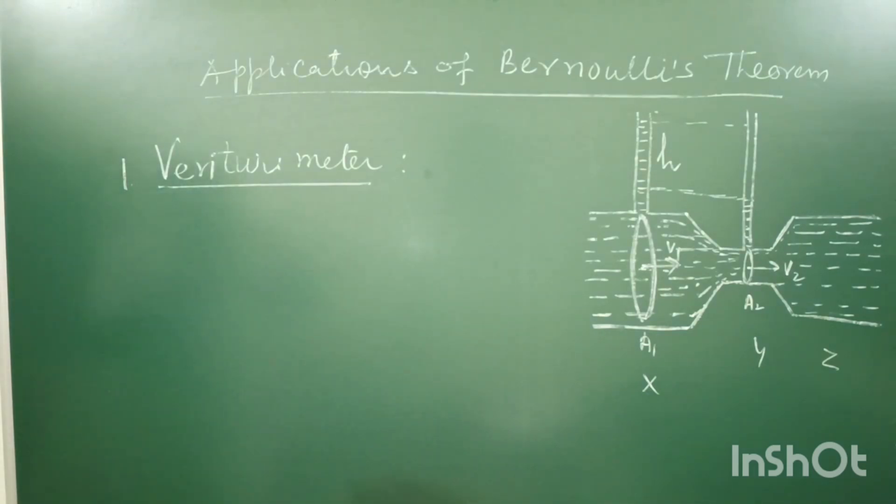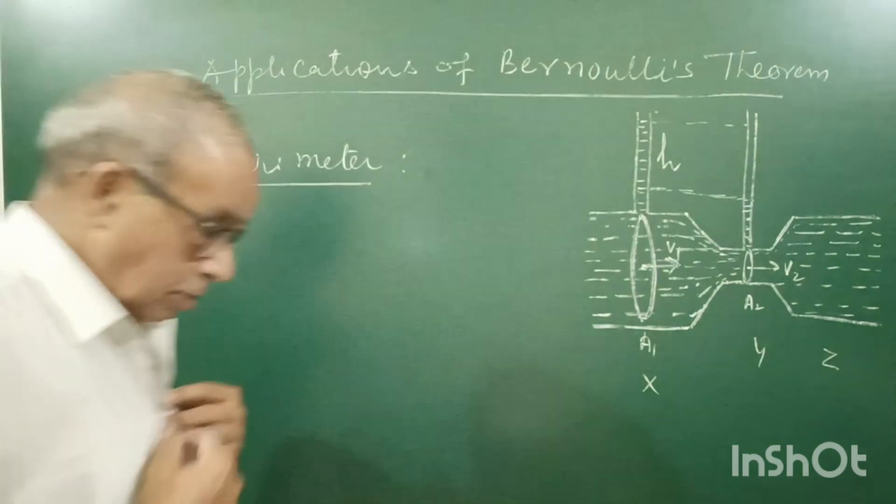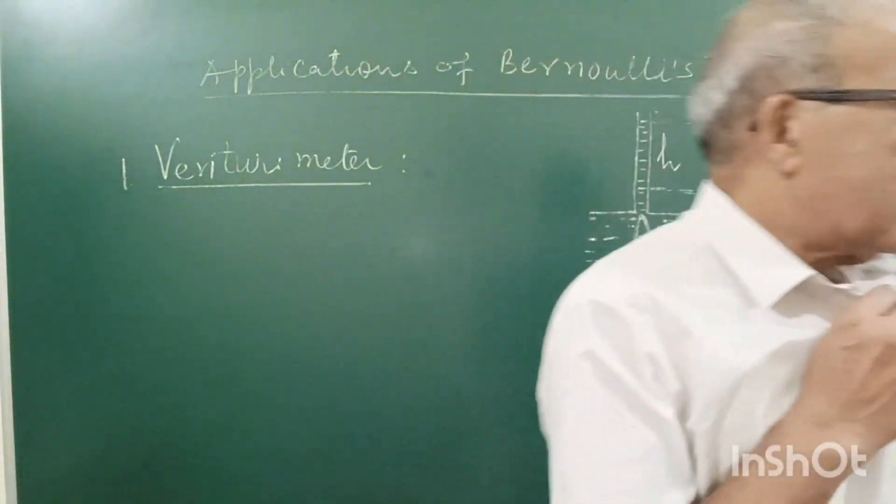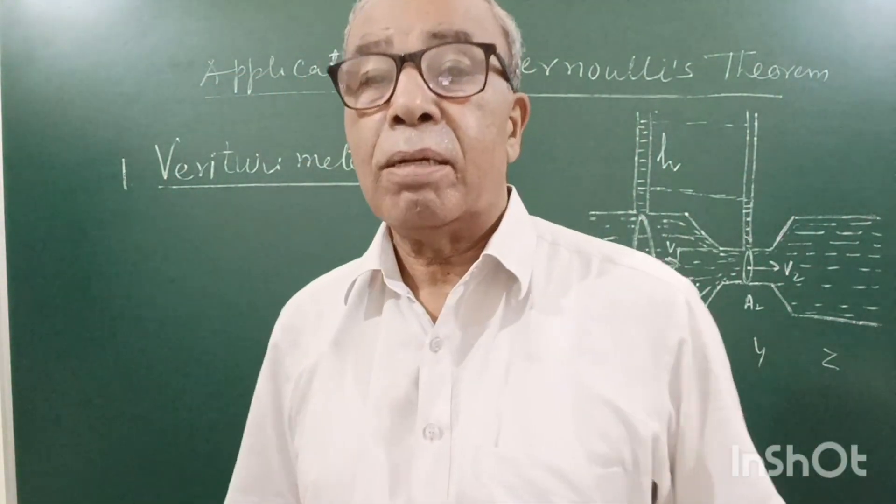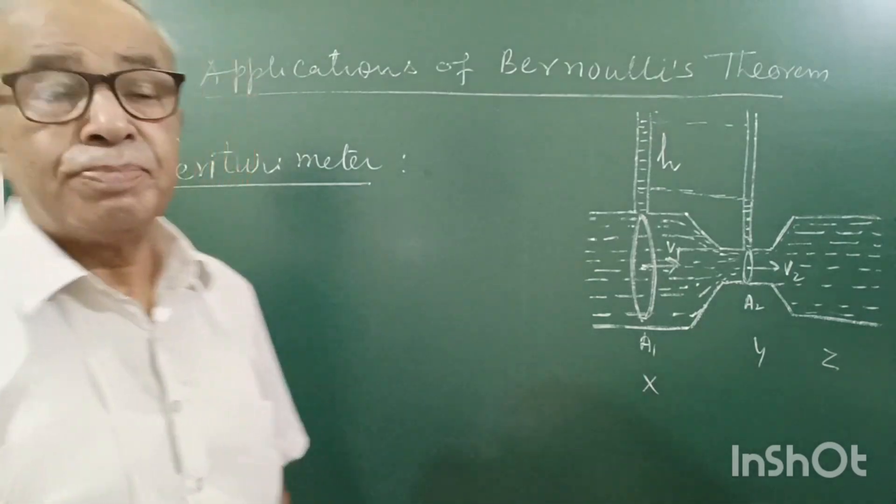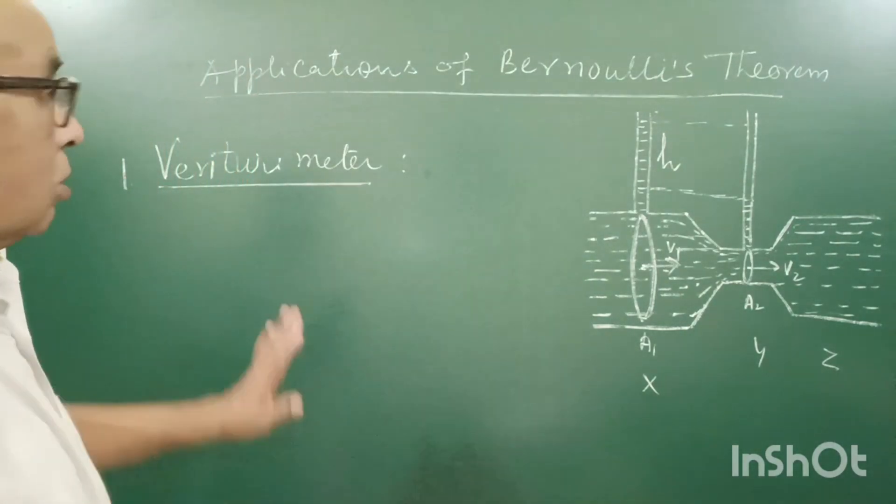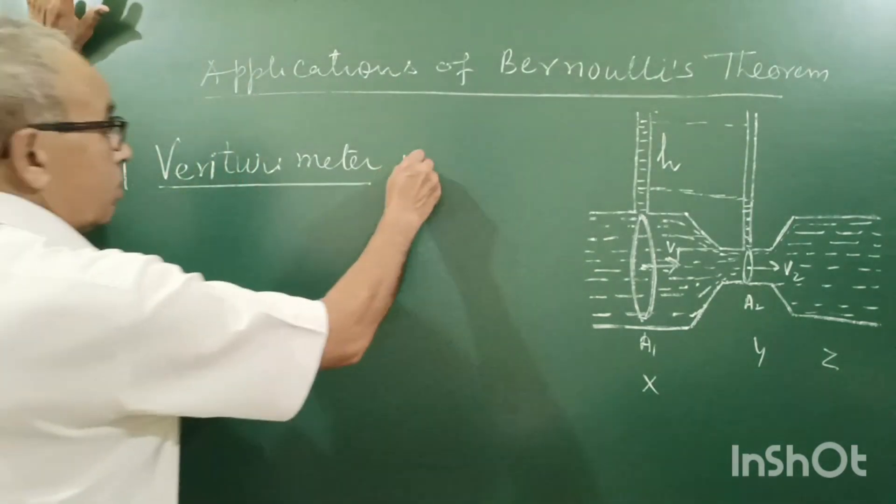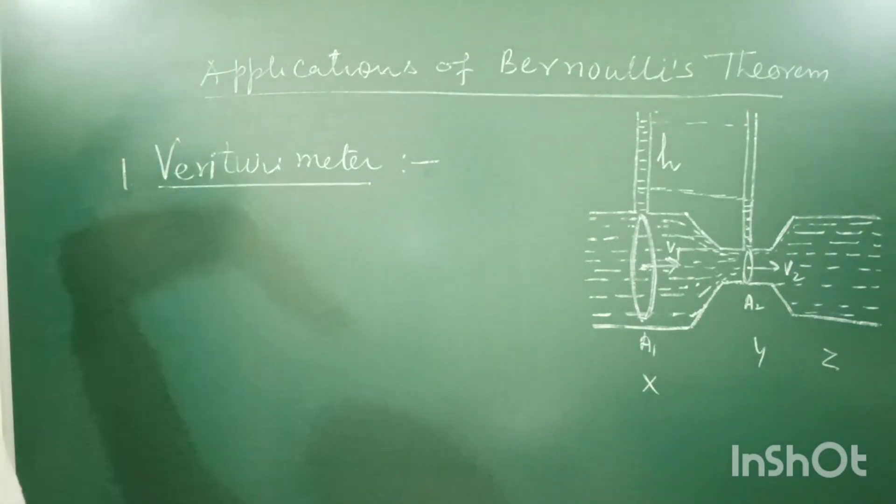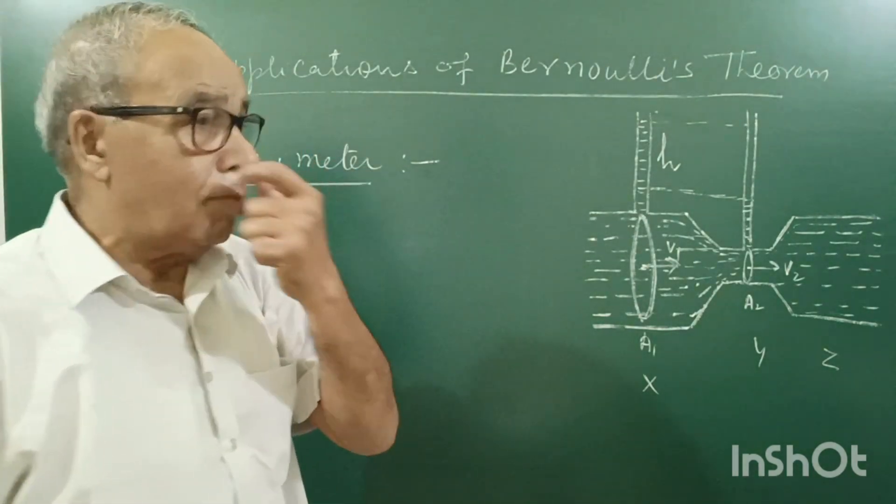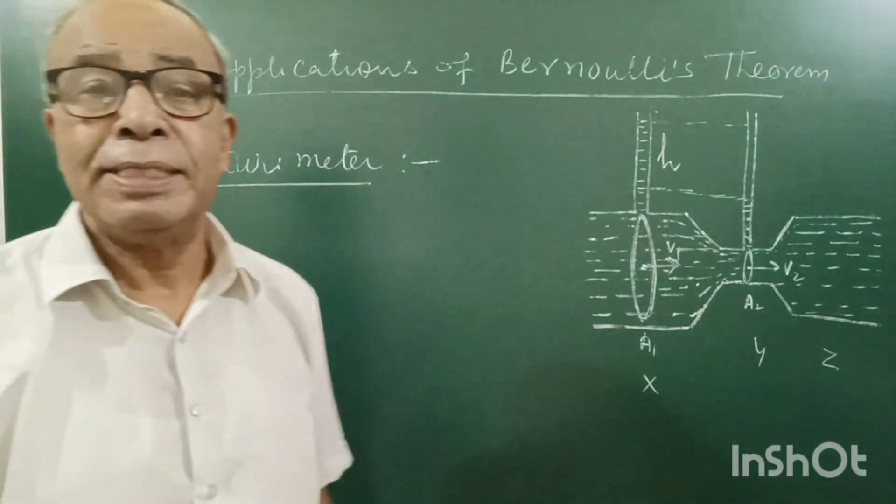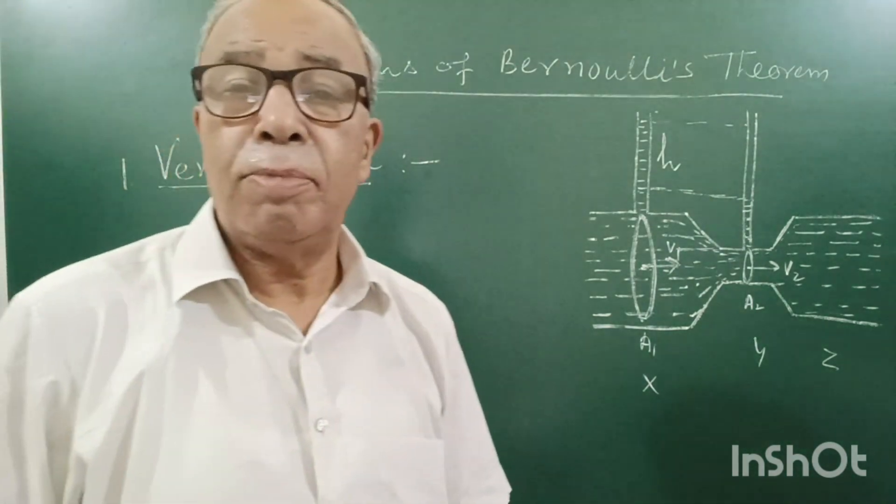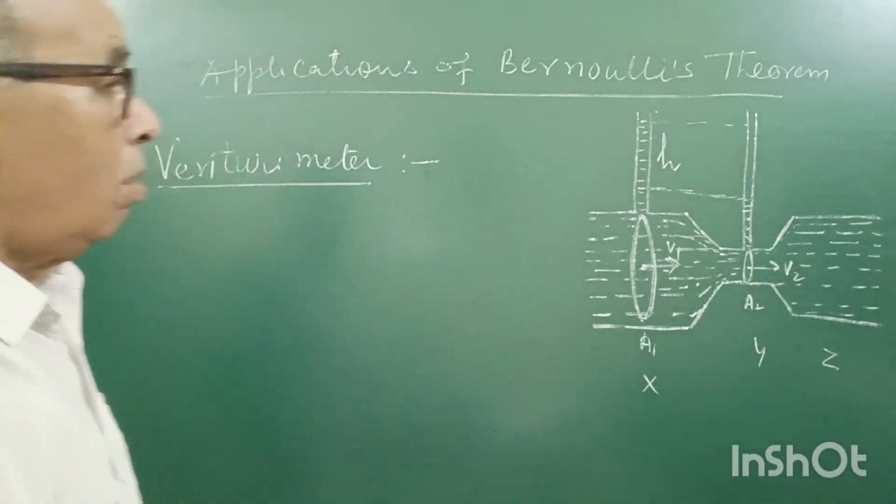You remember, there was one outcome of Bernoulli's theorem that in the region of high pressure, liquid flows slower, and in the region of low pressure, it flows faster. So, based on this we have the venturimeter. Venturimeter is a device which is used to measure the rate of flow of liquid.